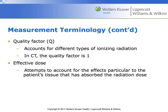Quality factor is going to account for different types of ionizing radiation. In CT, the quality factor is always one. The effective dose attempts to account for the particular patient's tissue and how the radiation would be absorbed to that body part.